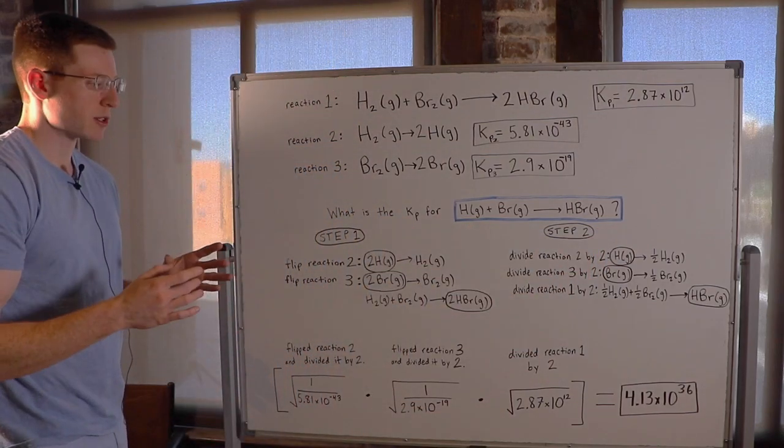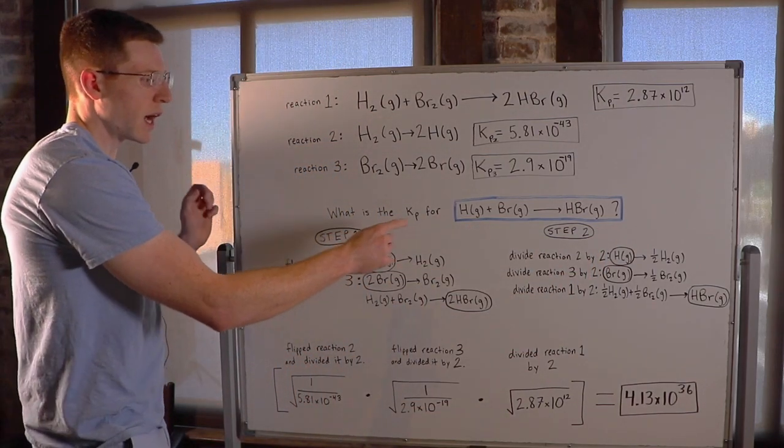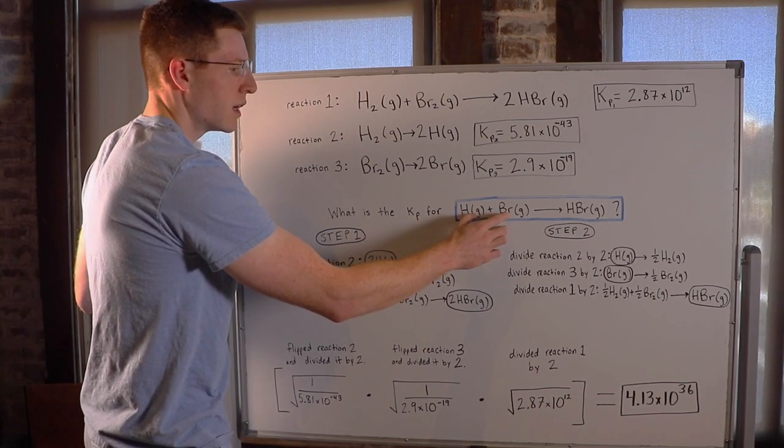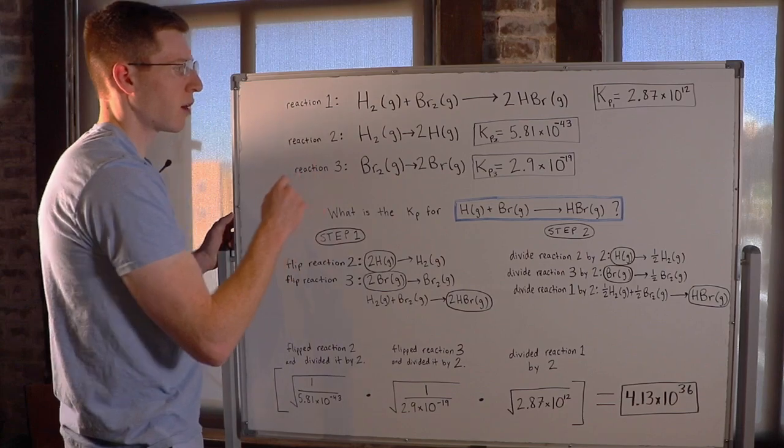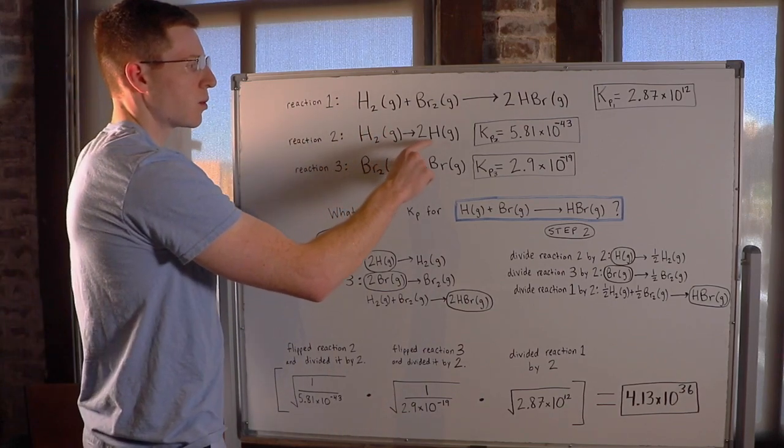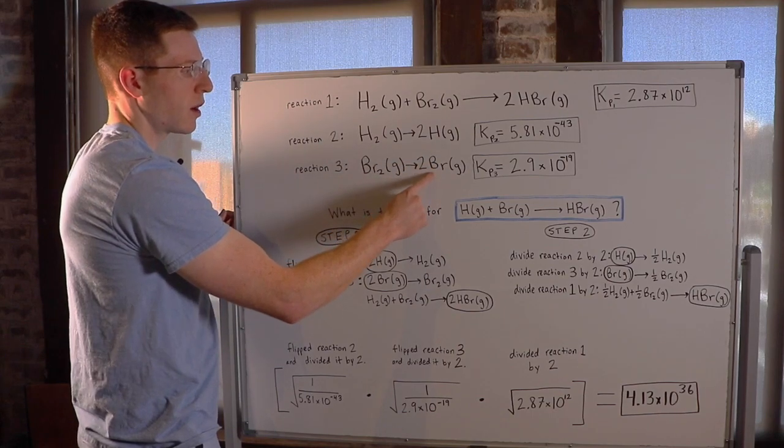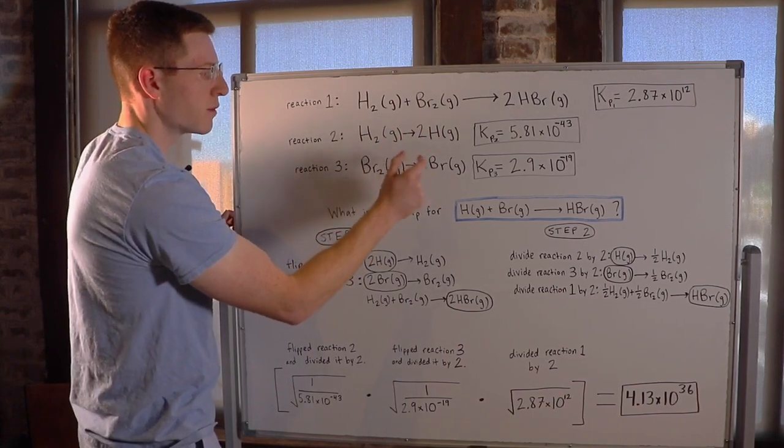So I did this in a couple steps. In step 1, I saw that I needed an H and a Br in my reactants. Well, the only H and Br I could find in these reactions were here and here. So I knew since these were in the product side, I had to flip both of these reactions.